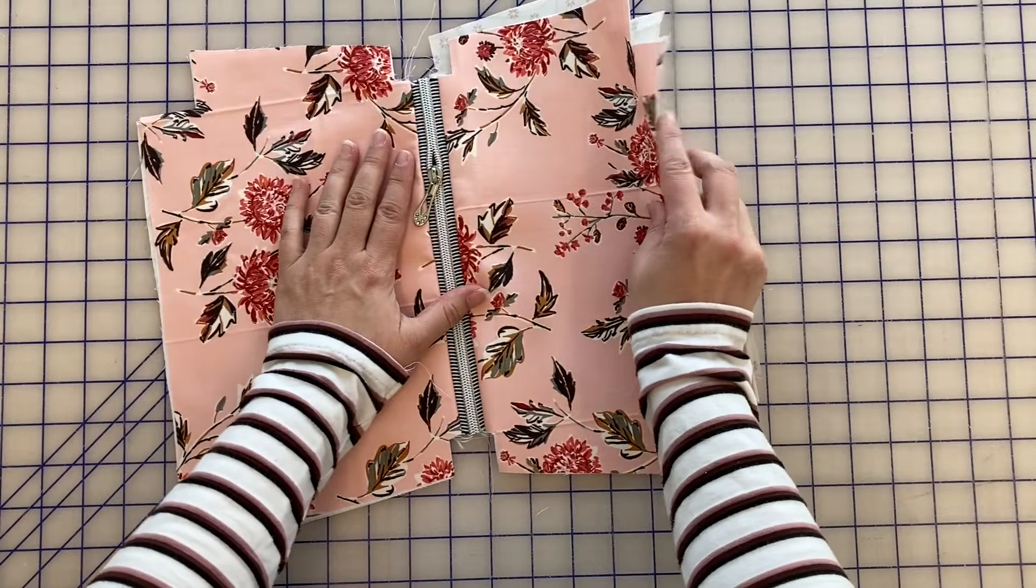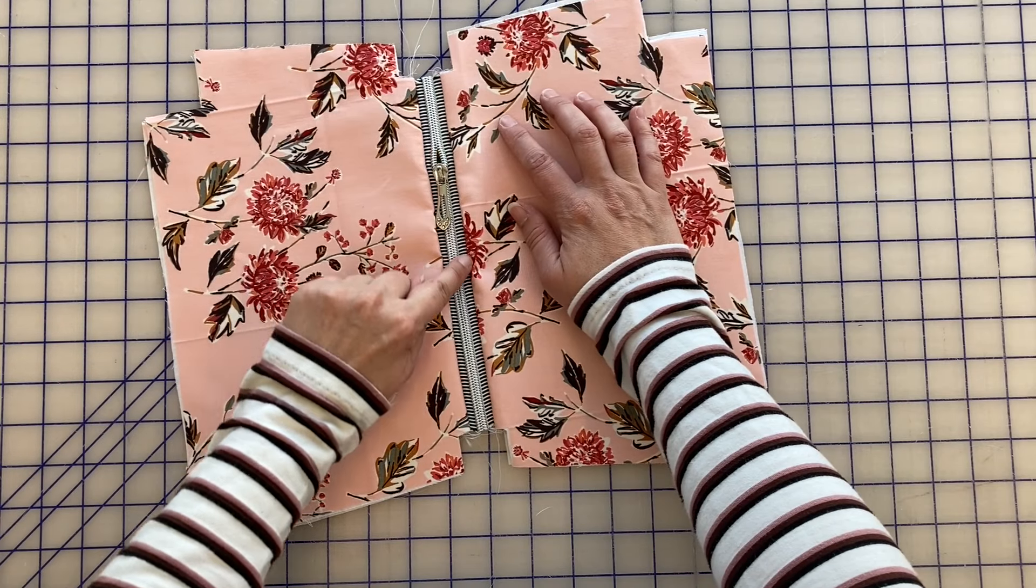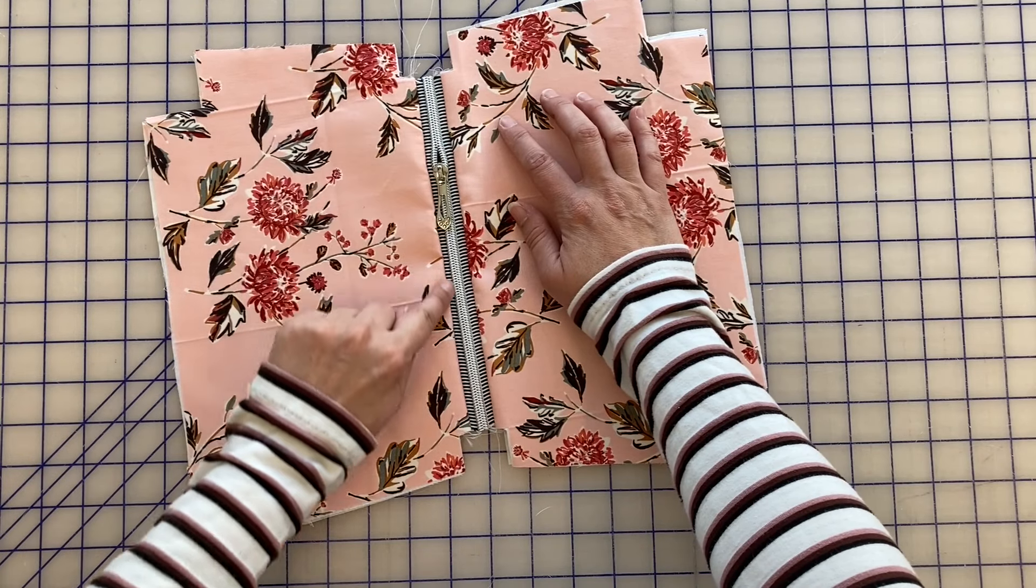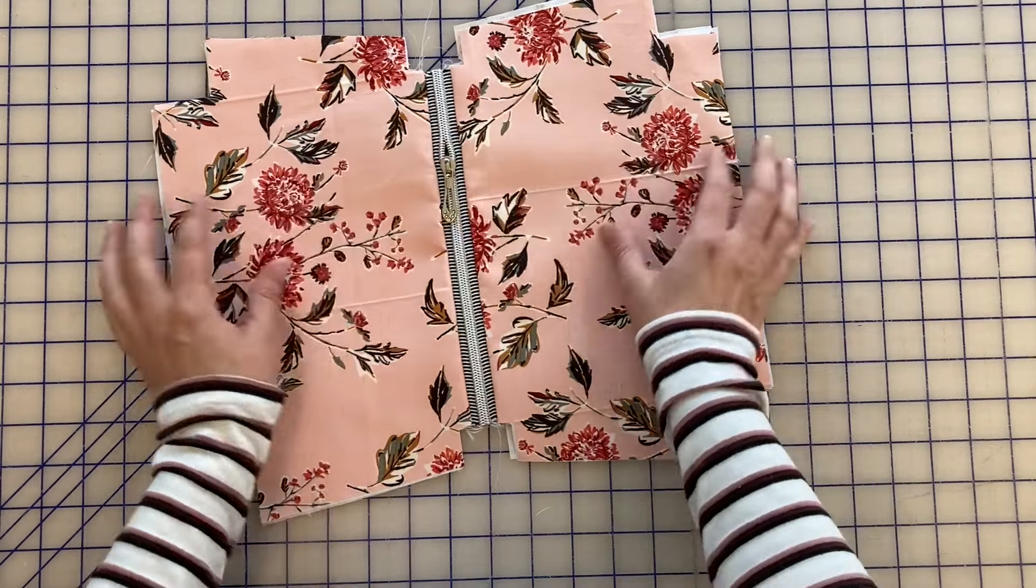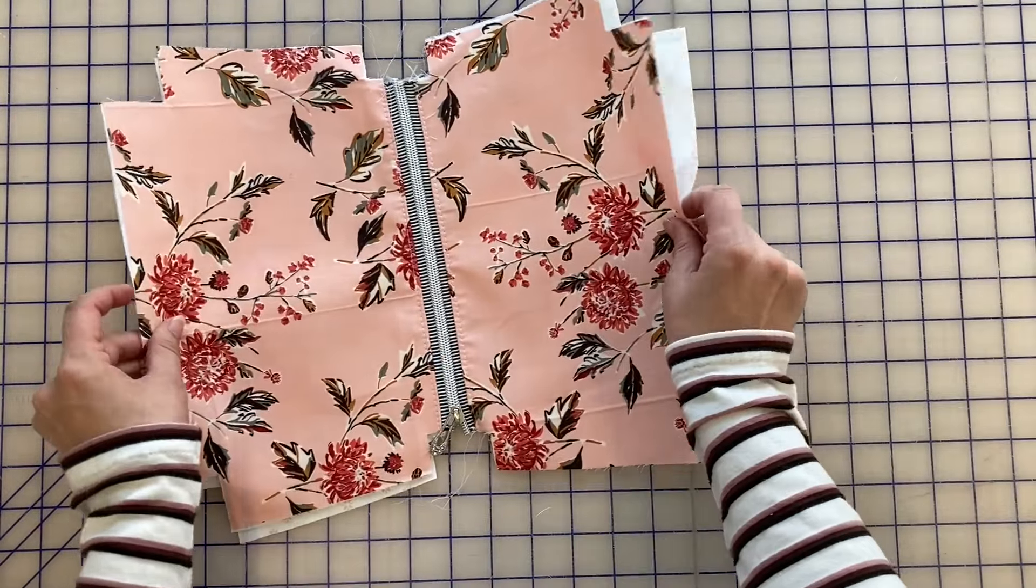What I'm going to do now is top stitch along both sides of the zipper just to make it look nice and tidy. Okay, so I've got my top stitching done and now we're going to start putting our bag together.